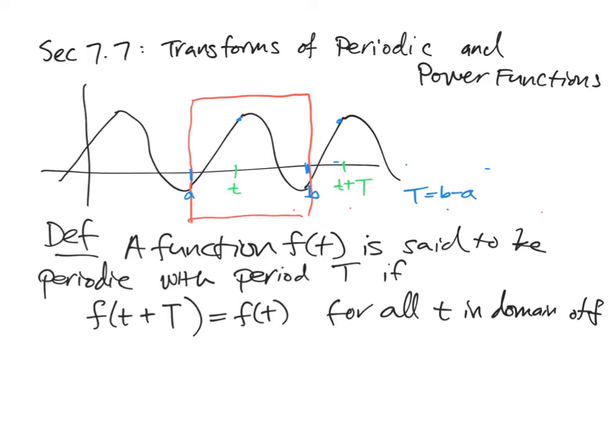So now we want to think about how we would take the Laplace transform of a periodic function. Something interesting is that with a periodic function, we have the stuff happening in the red box and then a bunch of translations of that. We have properties about how to do Laplace transforms of translations of functions, so let's think about the Laplace transform of just the stuff in the red box. From the last section we have a windowing function that helps us visualize just that. Let's move on to the next page.